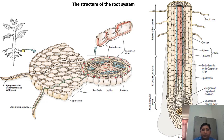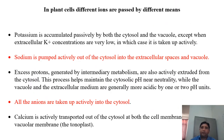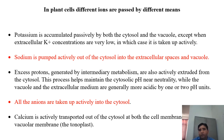This diagram shows the structure of roots, illustrating water movement via the symplastic and apoplastic pathways. The longitudinal section of the root zone clearly shows three zones: maturation zone, elongation zone, and meristematic zone. Different mechanisms are found in different cell types and organelles for nutrient uptake. Potassium is accumulated passively by both the cytosol and the vacuole, but when its concentration is very low, it is taken up actively. Sodium is actively pumped out of the cytosol into extracellular spaces and the vacuole.